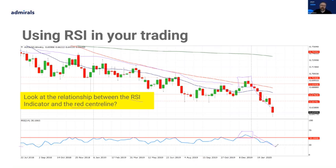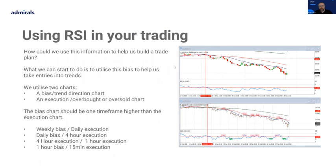As a new trader, keep it simple — try to stick to trading good trends when they show up. So how could we use this information to help us build a trade plan? It's all well and good having a bias, but how do we turn this into a trade plan? How do we utilize this information to make good trading setups?